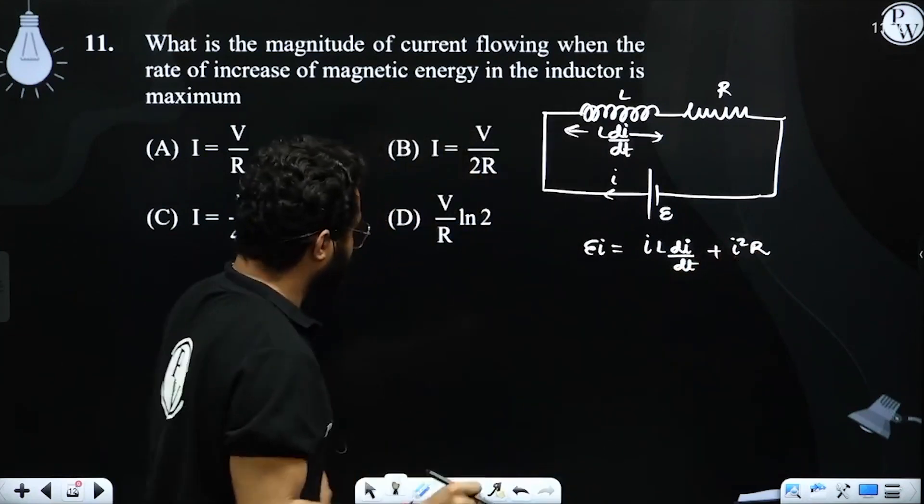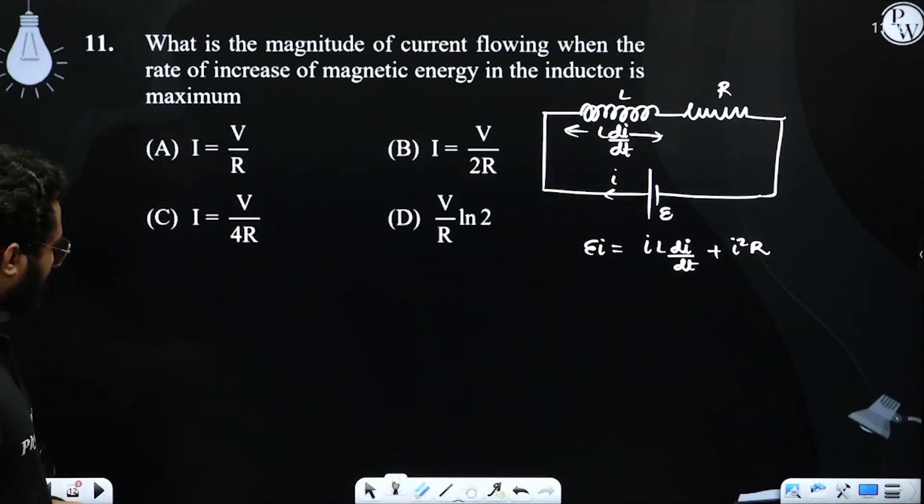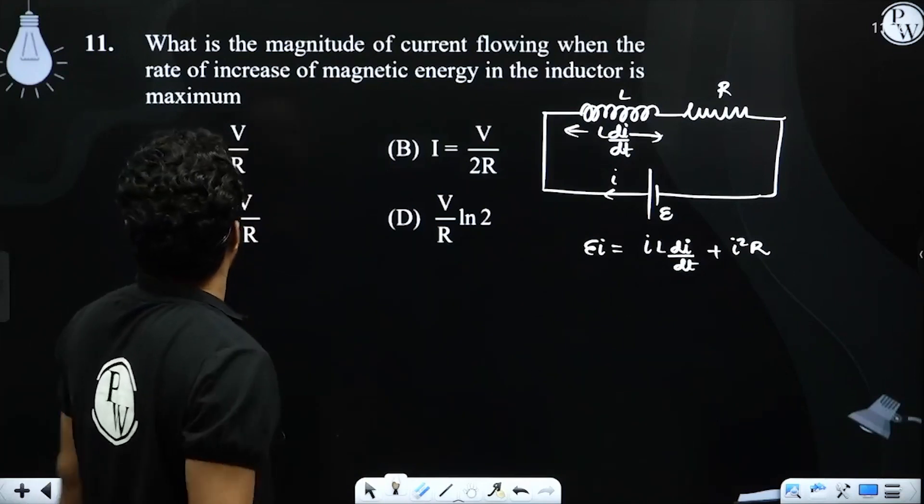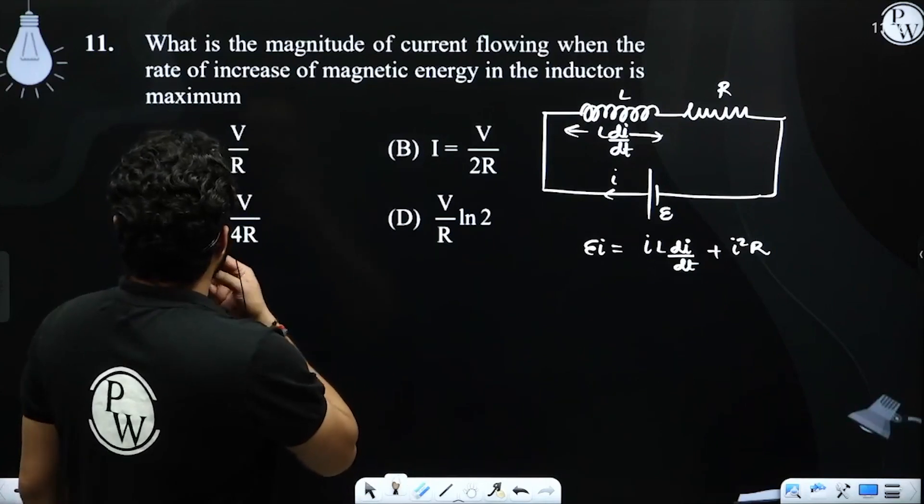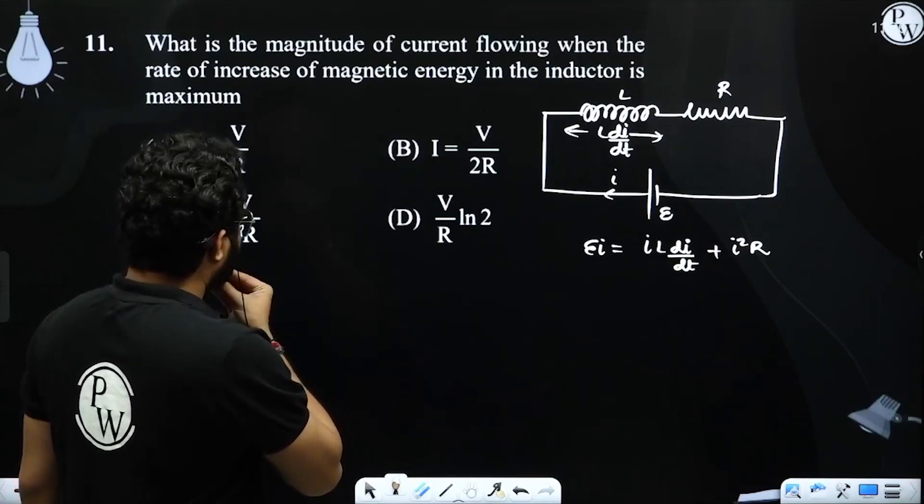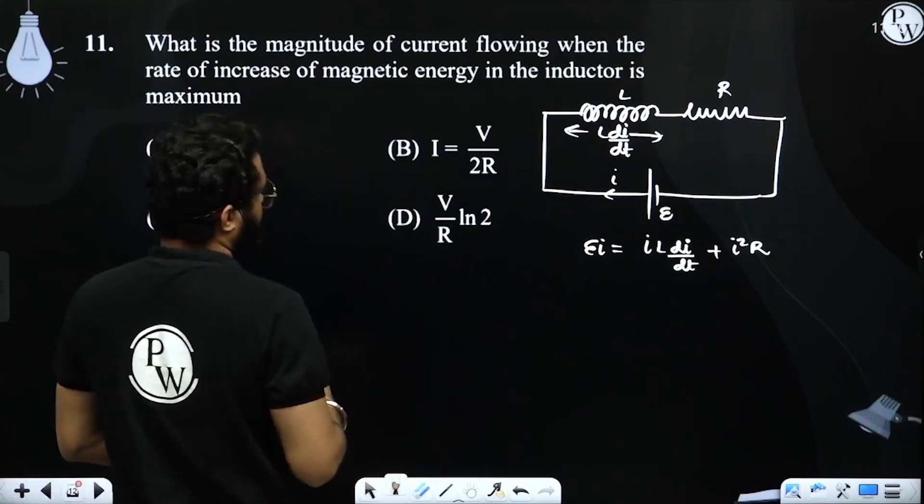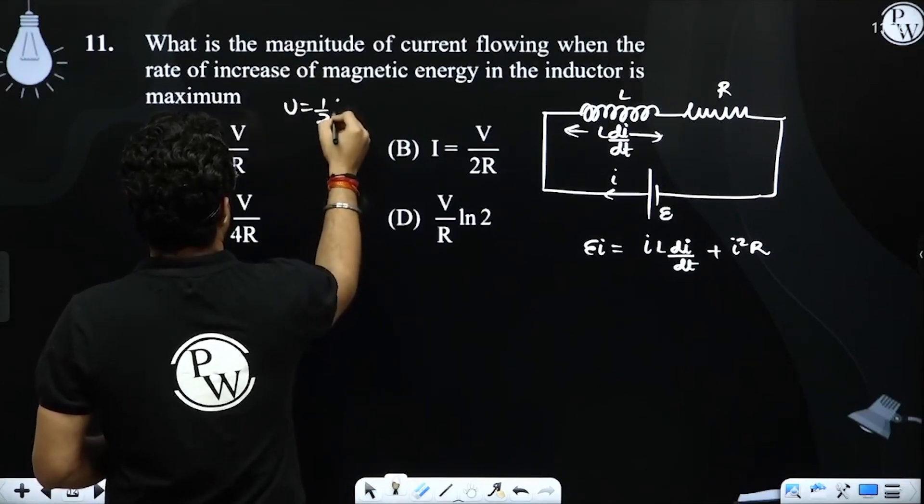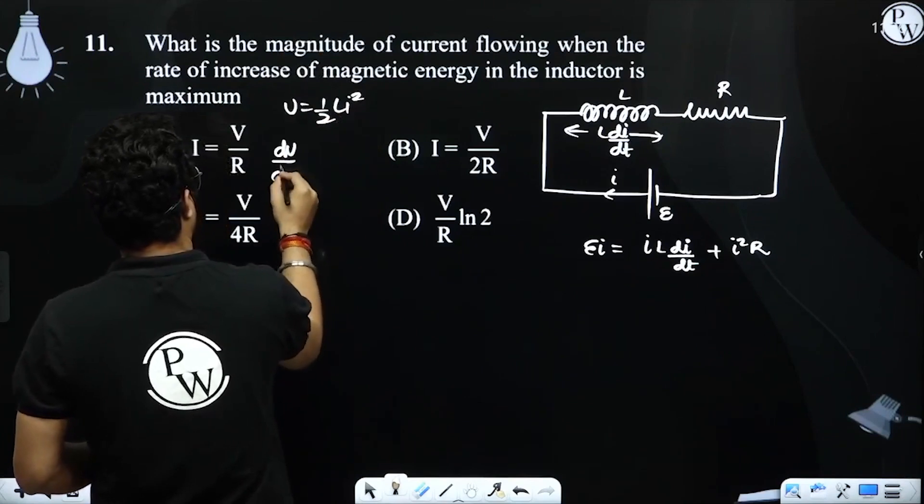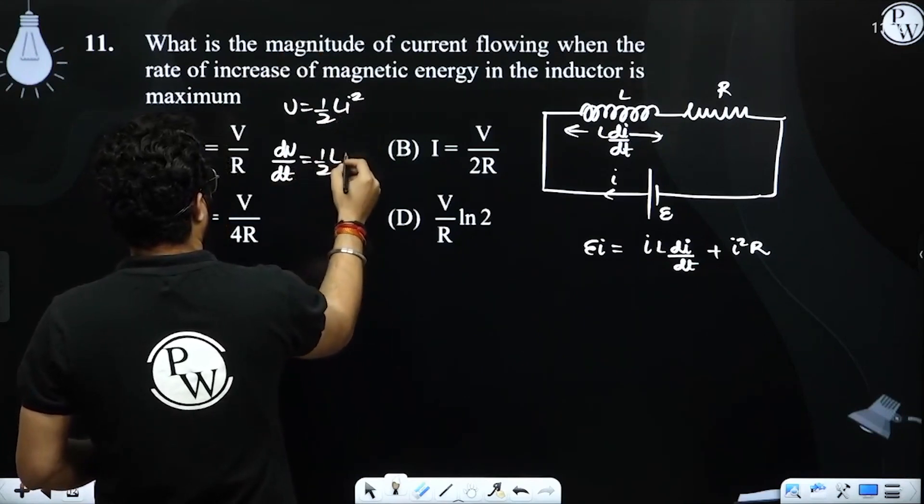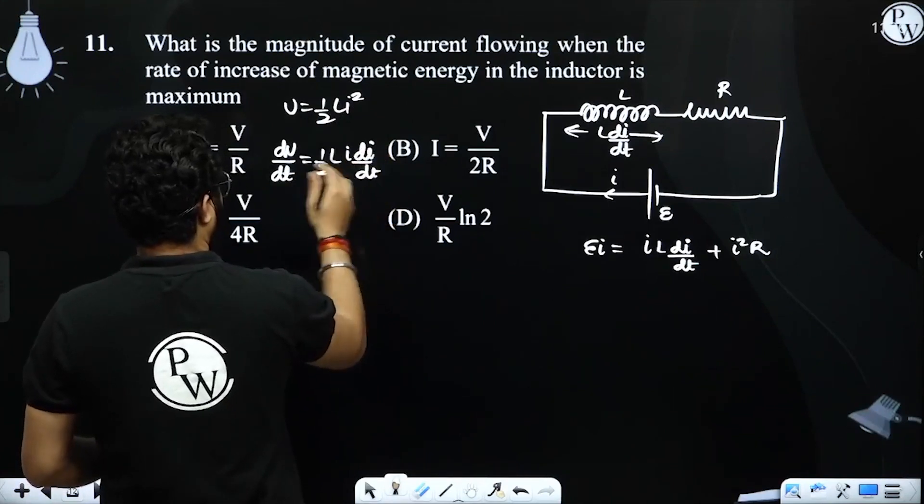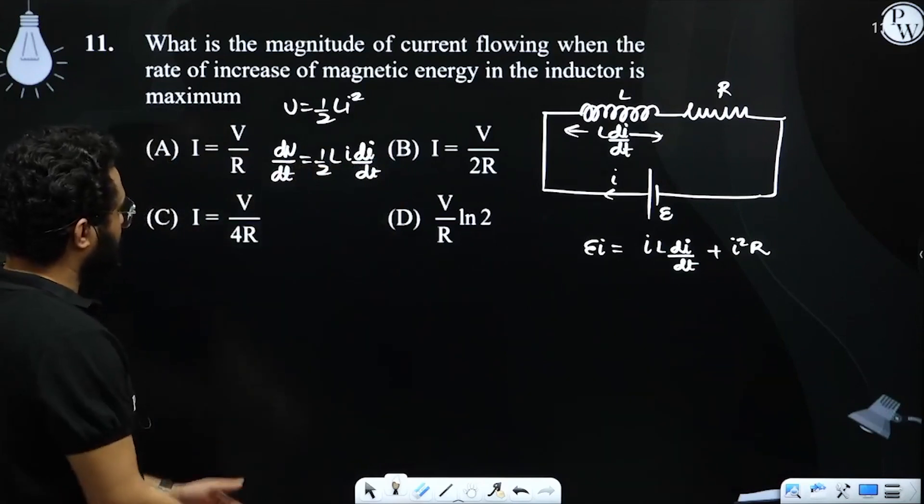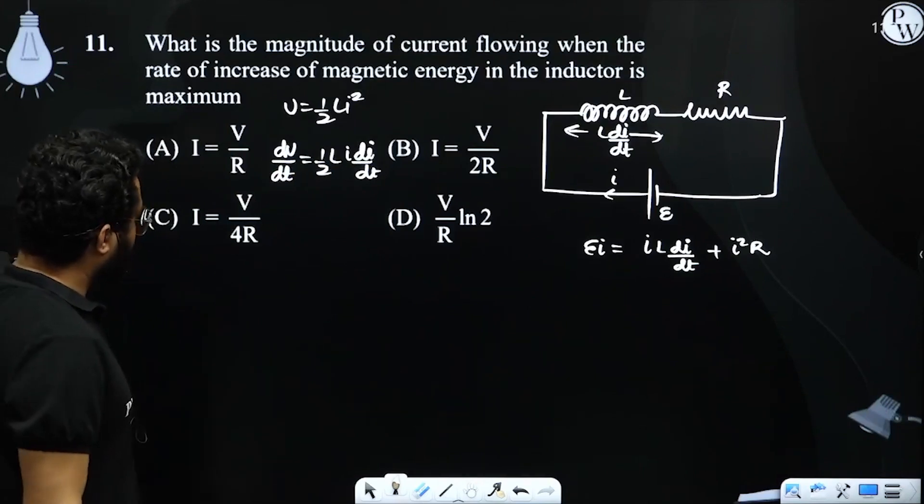plus i square r. E times i is equal to L i times di by dt plus i square r. So now you need the rate of increase of magnetic energy. So the energy is half L i square. Rate of increase of energy it will be L i times di by dt. Now this is max, so... maximum for...